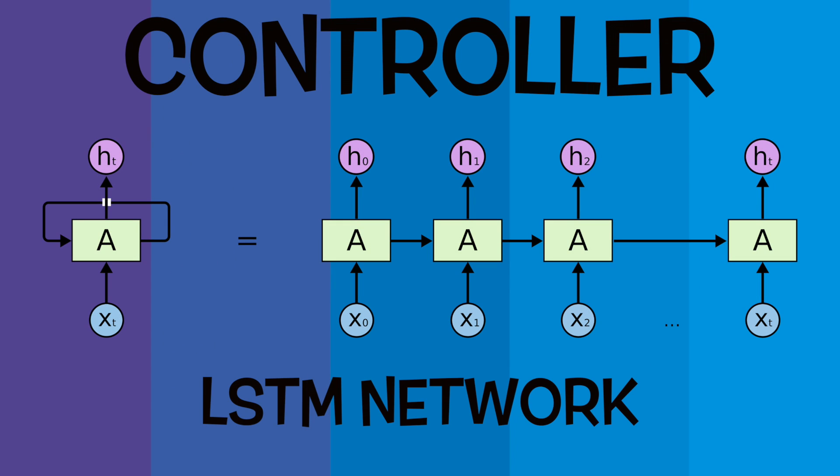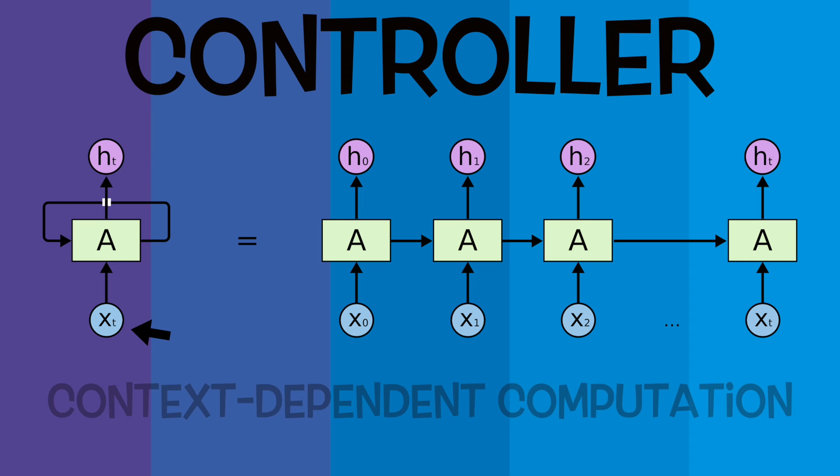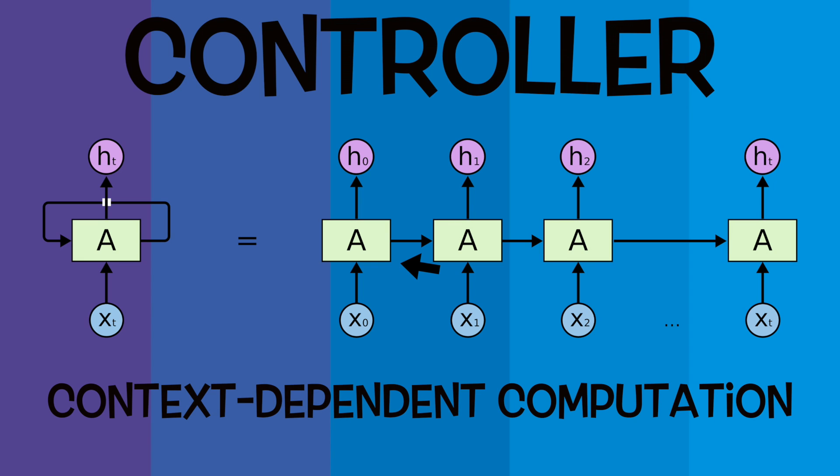For the controller, they use an LSTM recurrent network since its internal state is a function of the current state and the input to the system. It can perform context-dependent computation, so a signal at a current time step can influence the network's behavior later on.